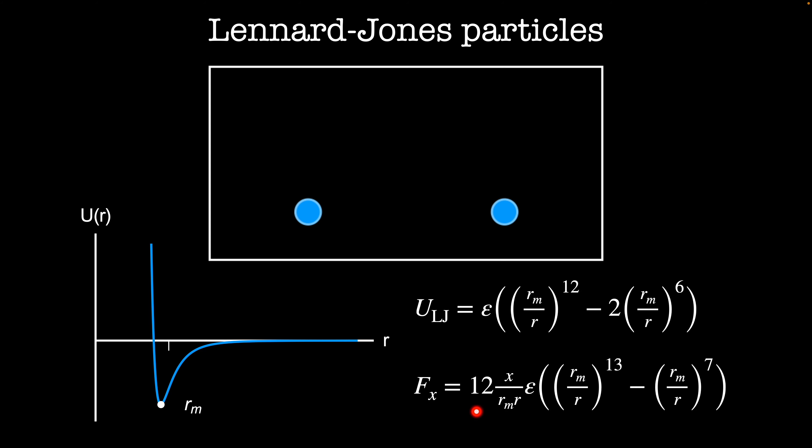we get a force that's 12x over r times r_min times epsilon, which is the scale of our interaction, times (r over r_min) to the 13th, minus an attractive piece that goes like (r_min over r) to the 7th.